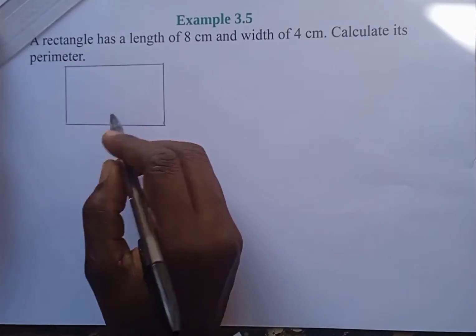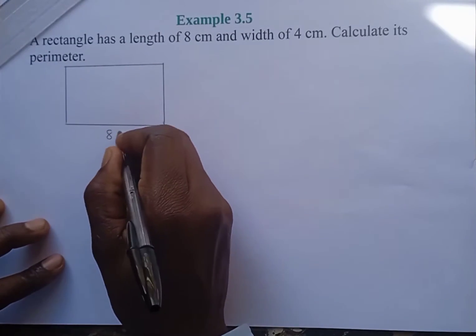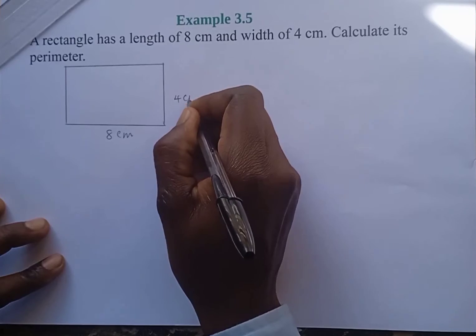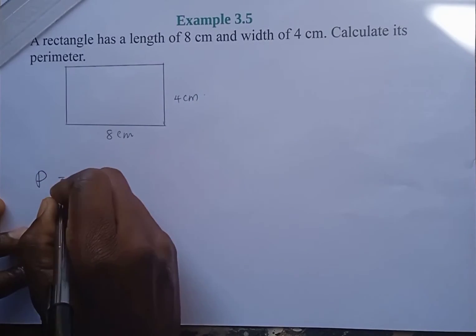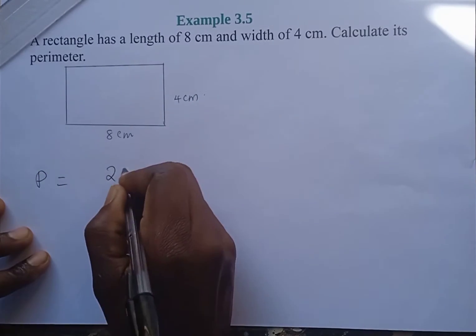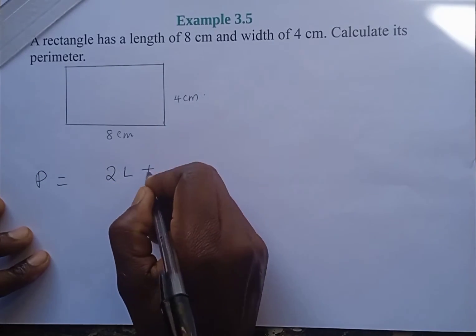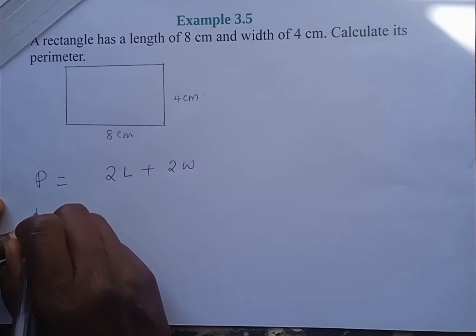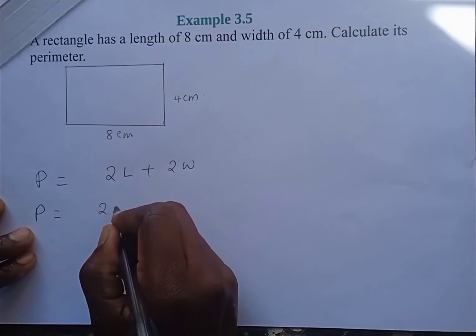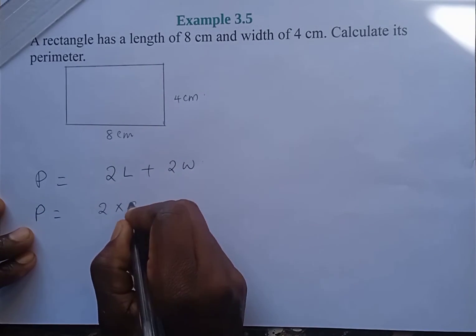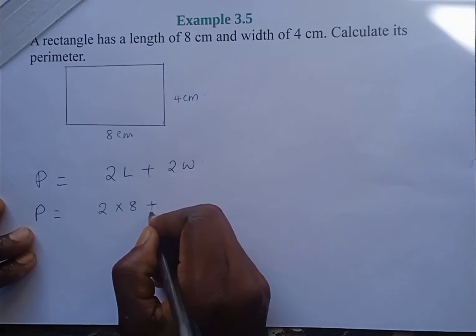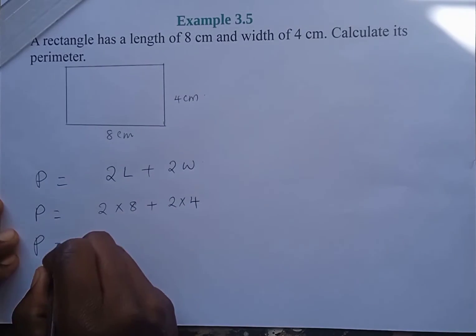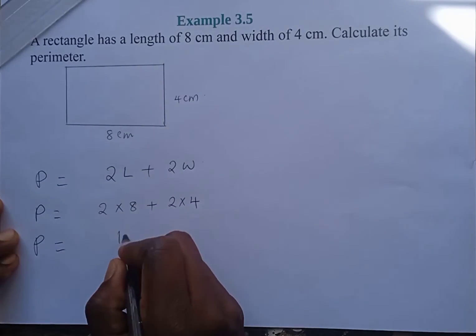The length is 8 centimeters and the width is 4 centimeters. The perimeter is 2 times length plus 2 times width. So the perimeter will be 2 times 8 plus 2 times 4, which gives 16.